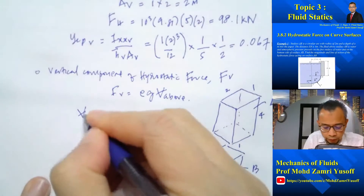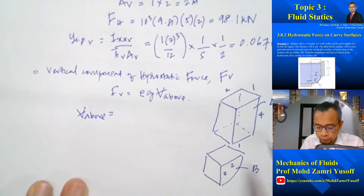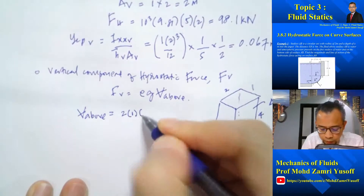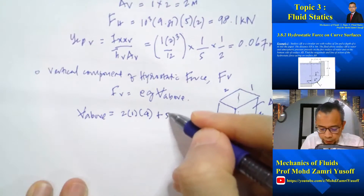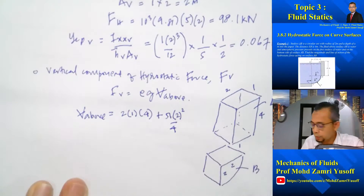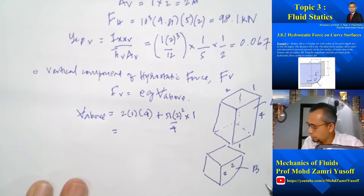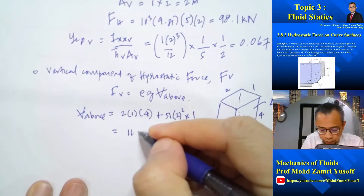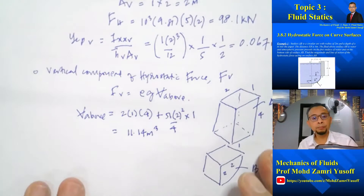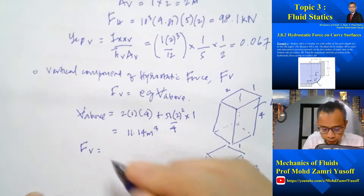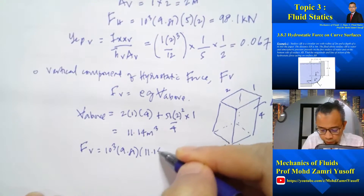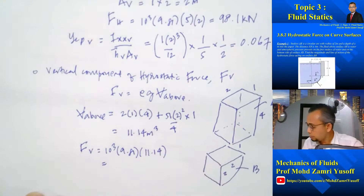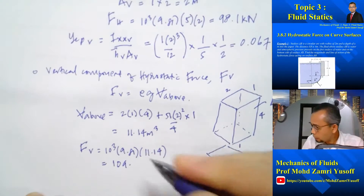So we can calculate V_above as the sum of Volume A and Volume B. Using these dimensions, V_above = 11.14 m³. Therefore F_V = 1000 × 9.81 × 11.14 = 109.28 kN.